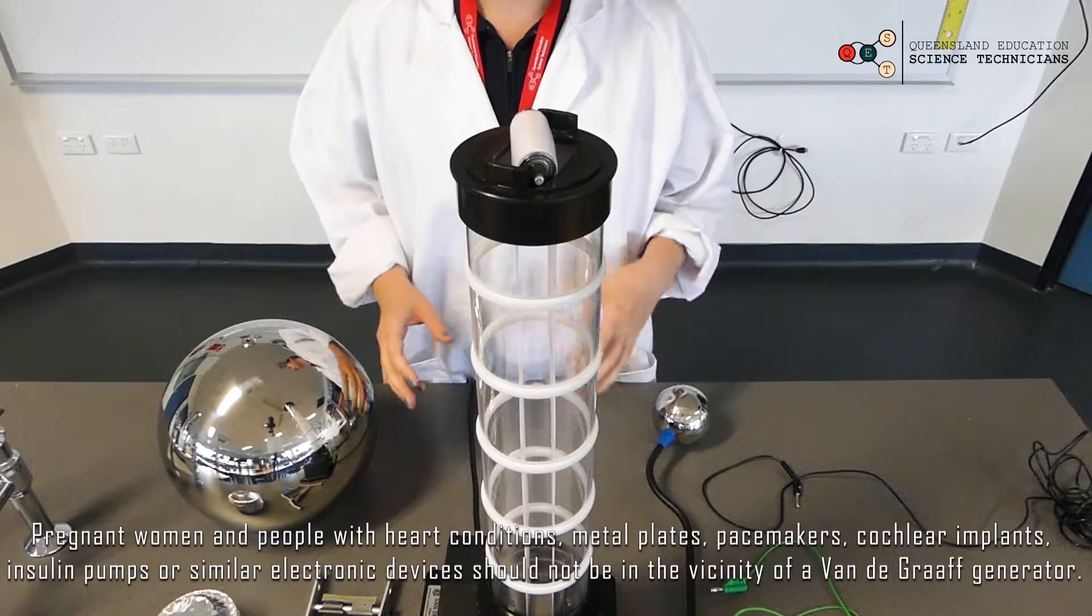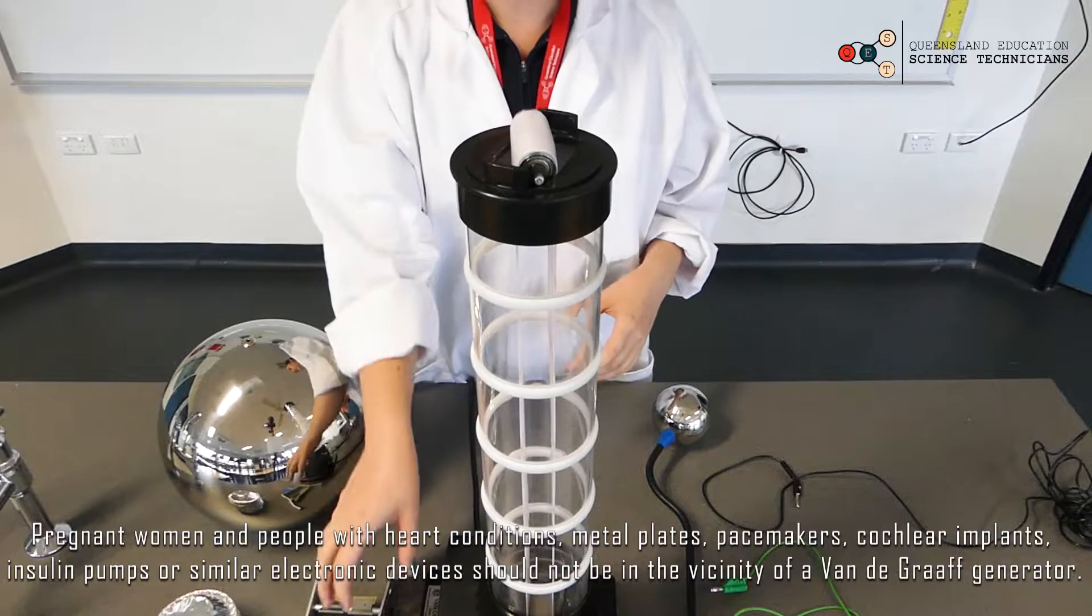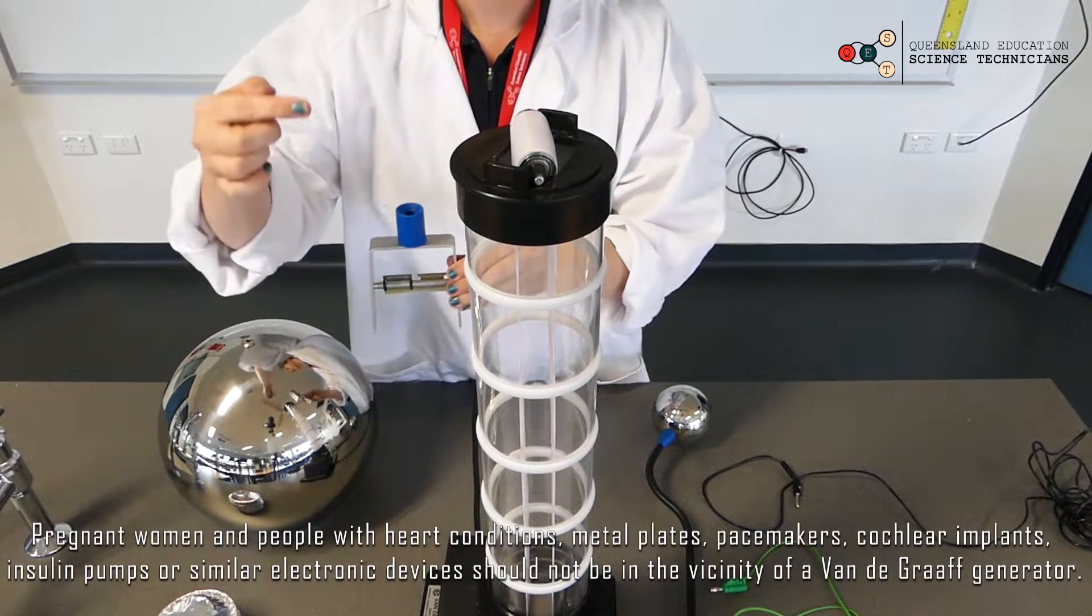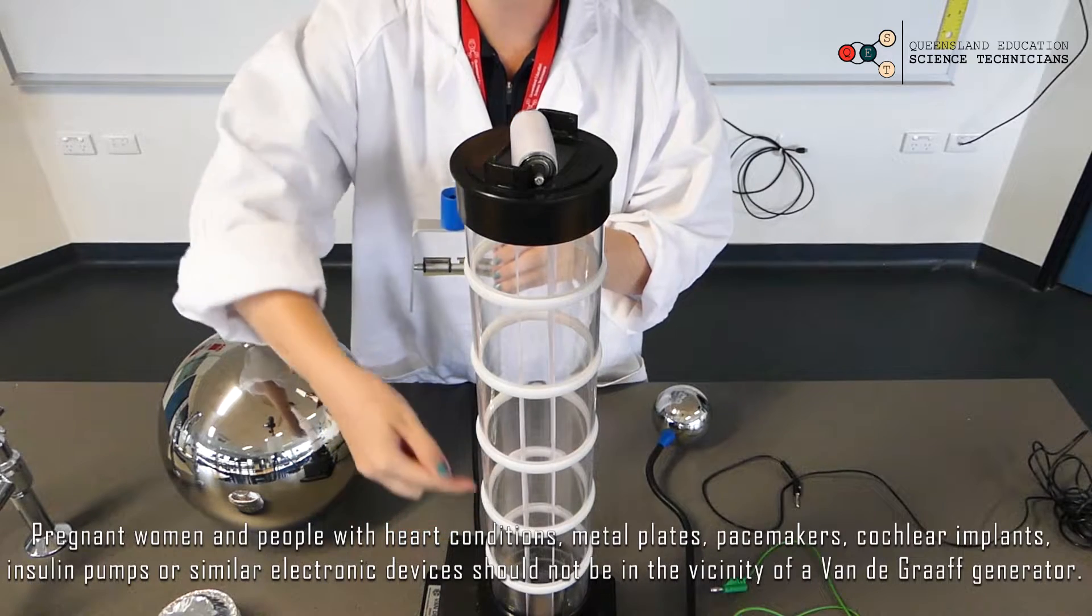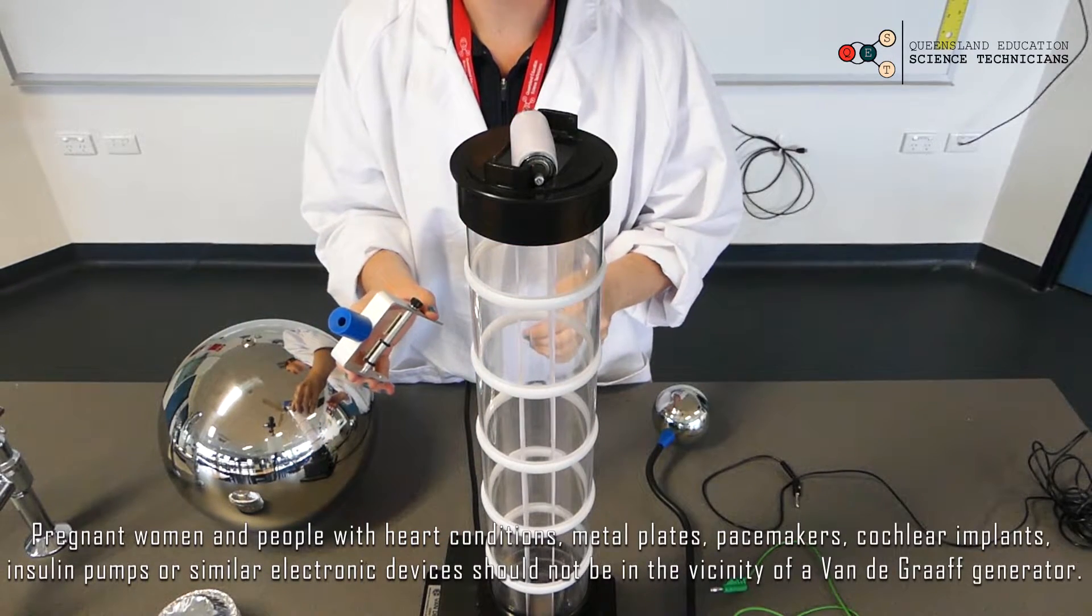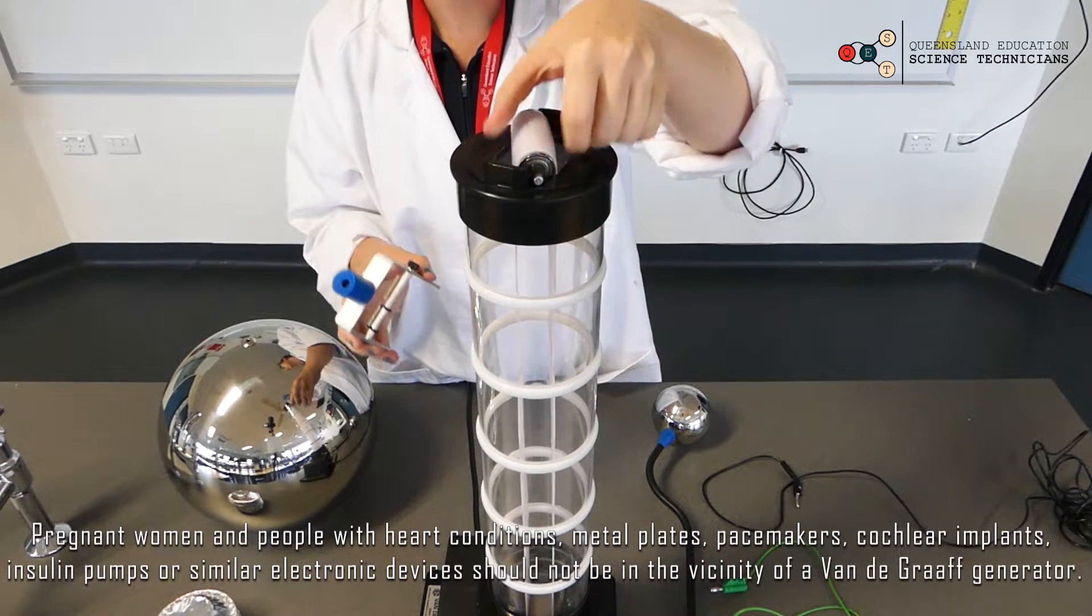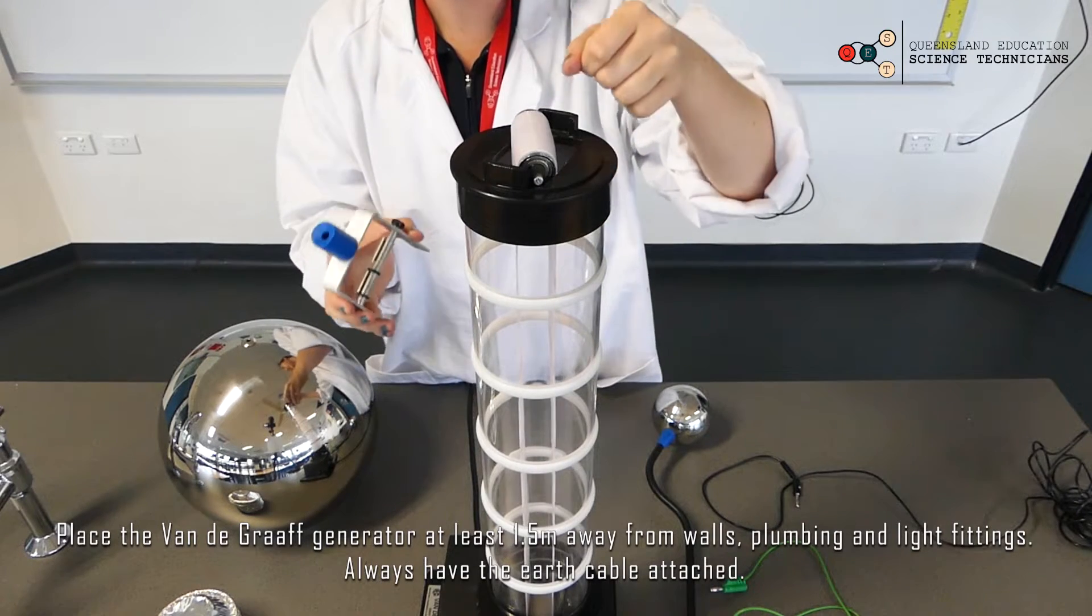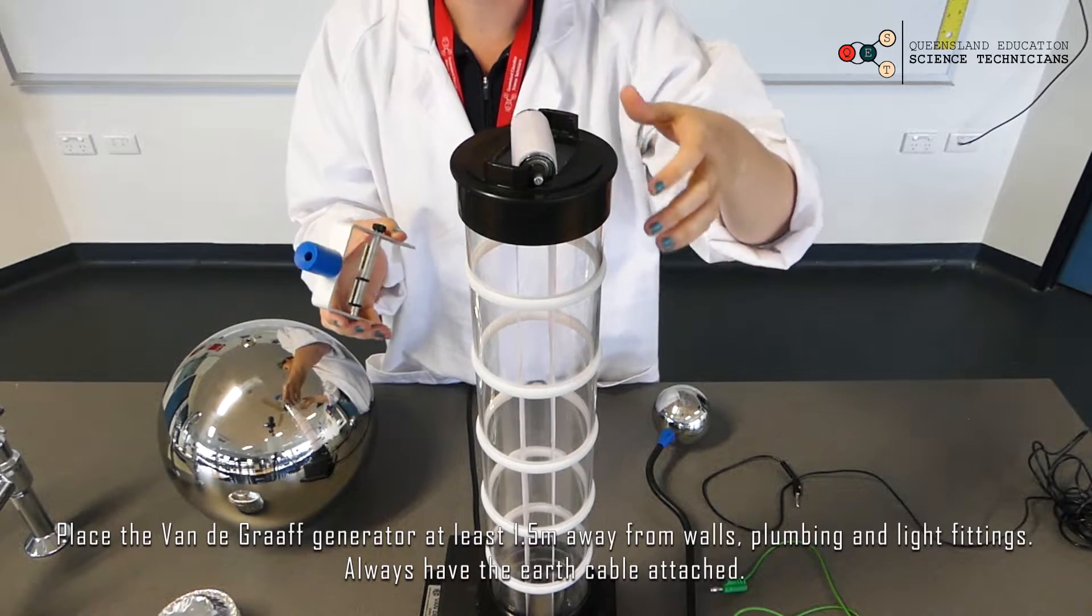The first step when putting your Van de Graaff together is to reattach the top comb to the belt that runs through the center column of the Van de Graaff. The comb is removed during storage so that the belt can be left slack. This is a good idea, it increases the lifespan of your belt, but does mean that you need to reattach it all when you take your Van de Graaff out to use it.